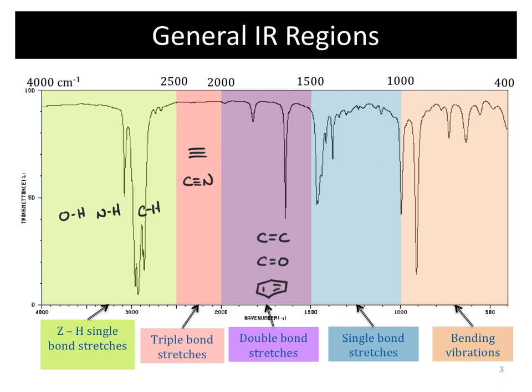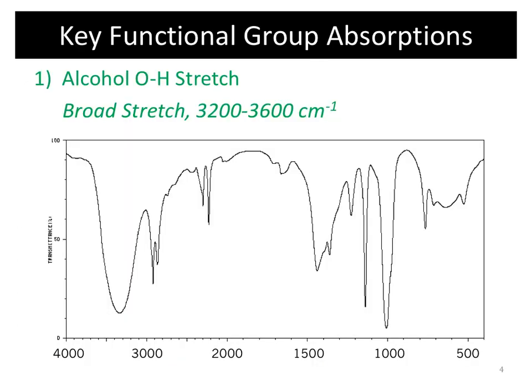Next we'll look at some of the most common functional groups to see where they appear and what they look like. First is the alcohol O-H stretch. It's going to be one of your most broad and intense stretches, usually around 3,200 wave numbers. This big, broad stretch indicates the presence of an alcohol in the molecule.